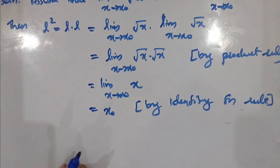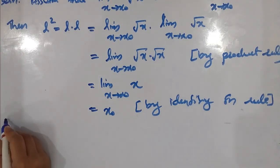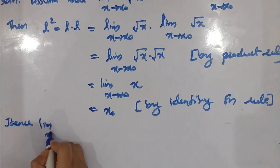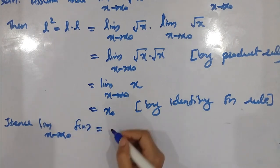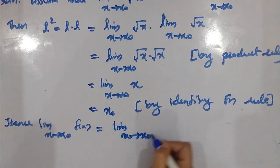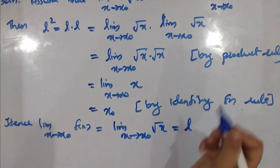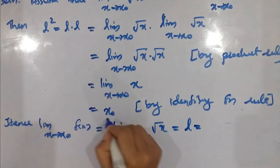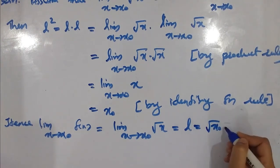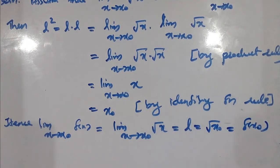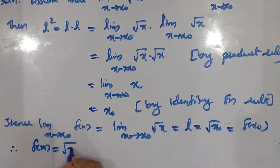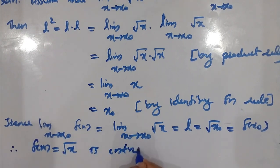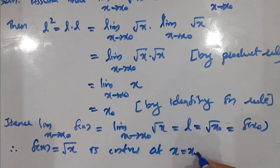I am going to put a limit. Limit as x tends to x₀. f(x) is √x. f(x) is equal to the limit as x tends to x₀ of f(x), which equals x₀. Therefore f(x₀) = x₀, so f is continuous at x = x₀. This is the way we will prove this.